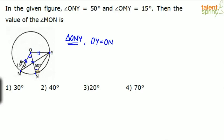Now look at triangle ONY. OY equals ON — both are radii, so both lengths are equal. If angle ONY is 50 degrees, then angle OYN will also be 50 degrees. We know that in a triangle the sum of angles is 180 degrees. So 50 plus 50 is 100, meaning angle NOY will be 80 degrees.